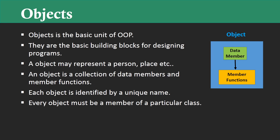Next, an object is a collection of data members and member functions. As you can notice on the screen, an object has two characteristics: one is attribute and another one is function, so each and every object will have data members and member functions. Next, each object is identified by a unique name — your program can have any number of objects, but each and every object needs to be identified by a unique name.